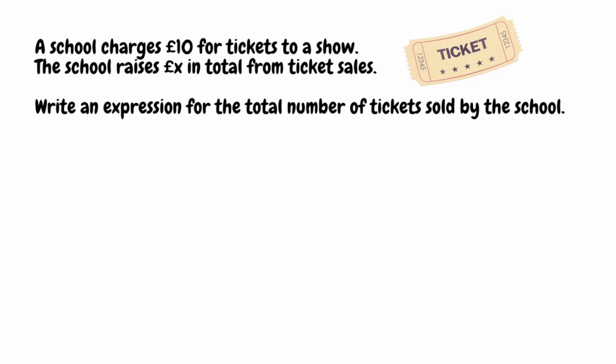Now applying that to the original question: the school raised a total of x pounds from ticket sales, and we divide that by the cost of each ticket, which is £10. So our final answer is x divided by 10.